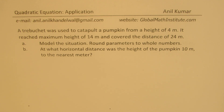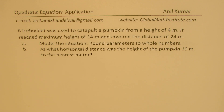The question here is: a trebuchet was used to catapult a pumpkin from a height of 4 meters. It reached a maximum height of 14 meters and covered a distance of 24 meters. Based on this, we have two questions: a) model the situation, round parameters to whole numbers, and b) at what horizontal distance was the height of the pumpkin 10 meters, to the nearest meter.